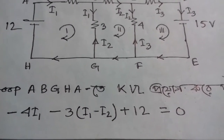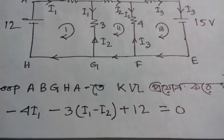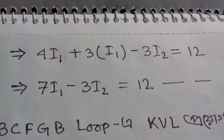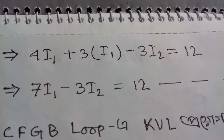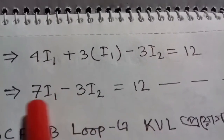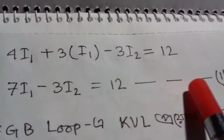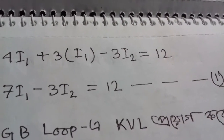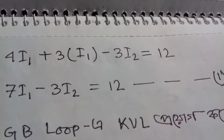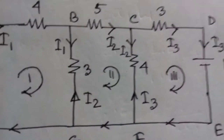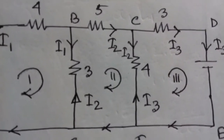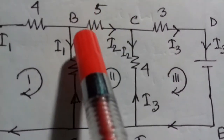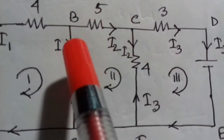Now this is simplifying. If we look at loop two, we will write the equation for loop 2. There is loop 2: minus 5 i2.